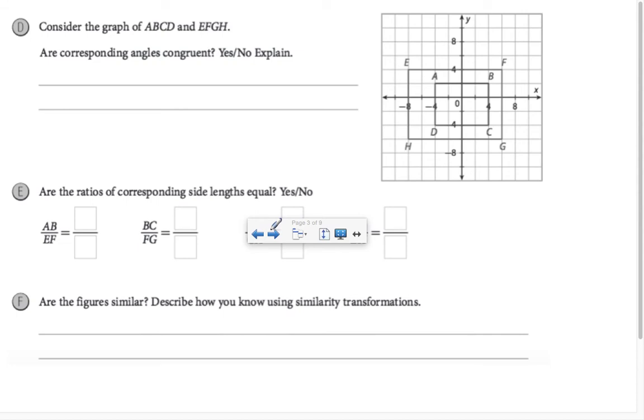In this example, I'm asked to consider the graph of ABCD and EFGH. Are the corresponding angles congruent? Well, that's easy enough to determine. These are both rectangles, and in a rectangle, all angles are right angles. So yes, they are rectangles, all 90-degree angles.